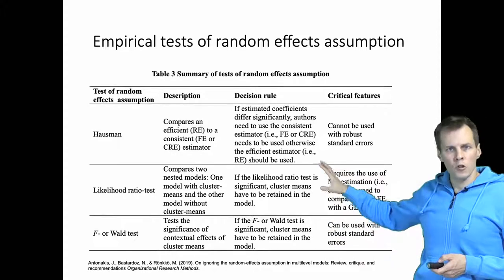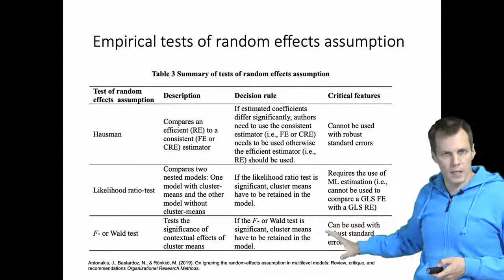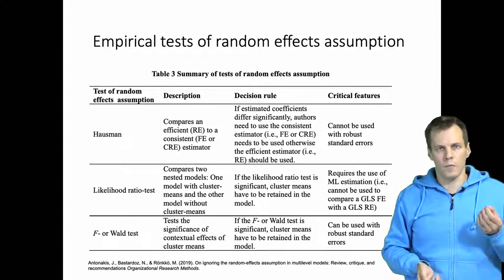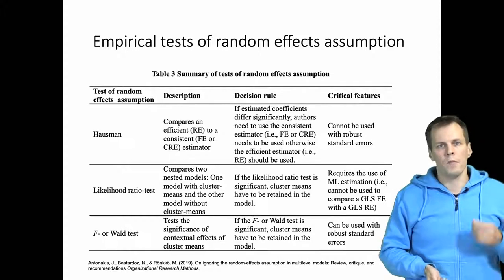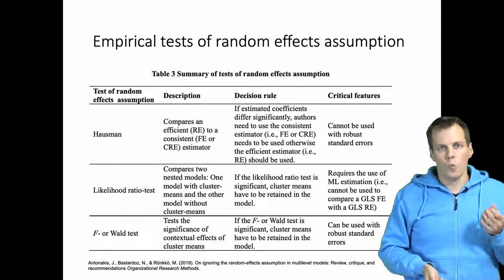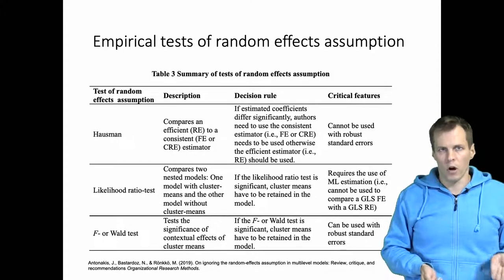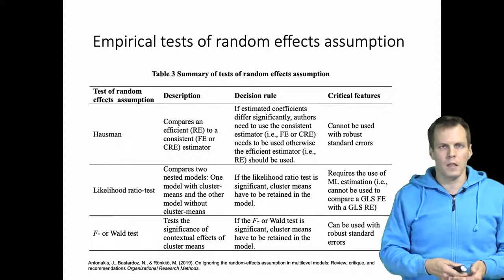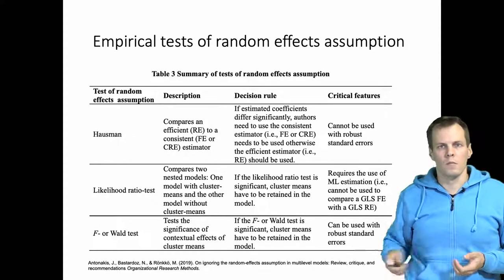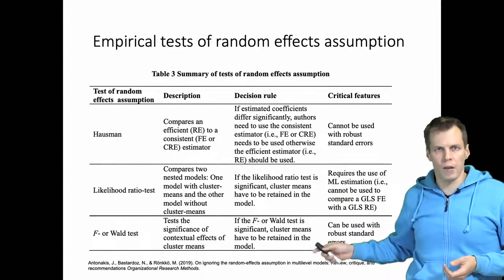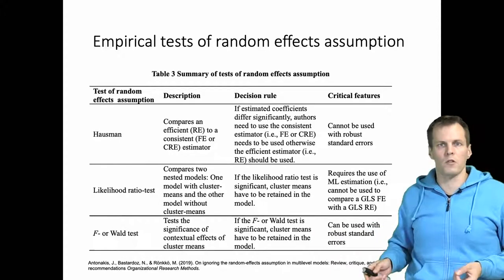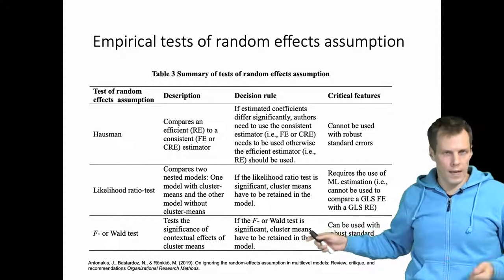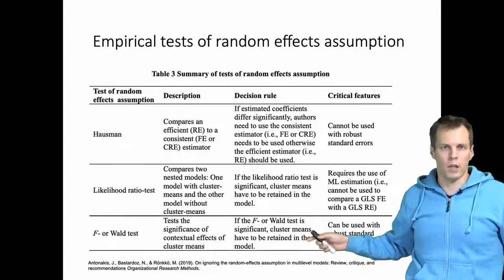The likelihood ratio test and the F test are based on estimating a model with the cluster means as controls, and they directly test whether there is a contextual effect in the data. Understanding the logic behind these tests is fairly straightforward if you understand the likelihood ratio test for model comparisons or the F and Wild test for multiple hypotheses.